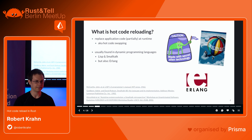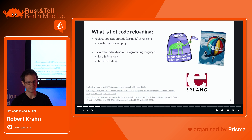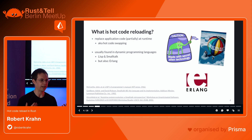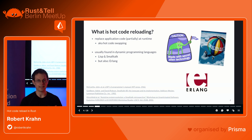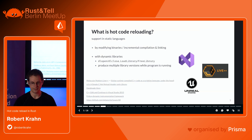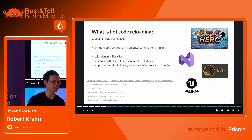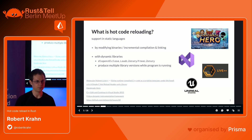These languages basically ship a compiler with their runtime, and this is basically how they make it possible. With static languages like C++, C, and Rust, that is not the case, and we need different options to implement it. One option is to directly change the running code - the executable, the binary.